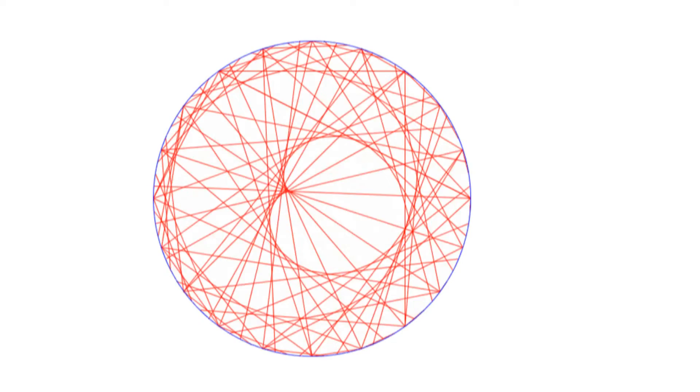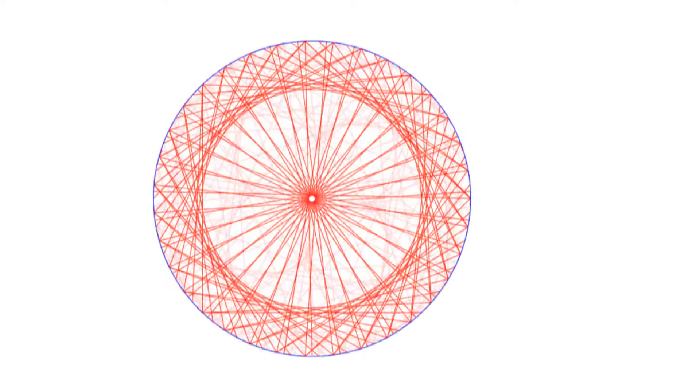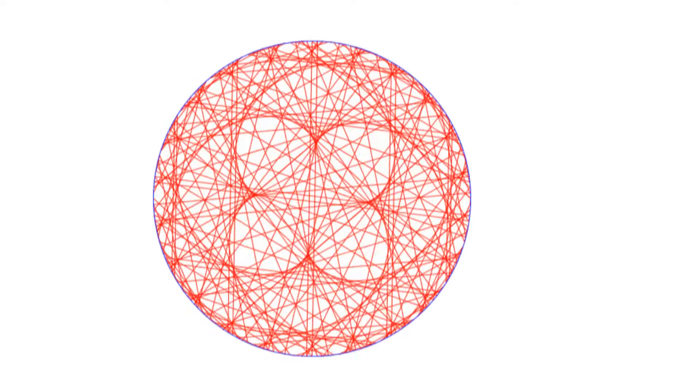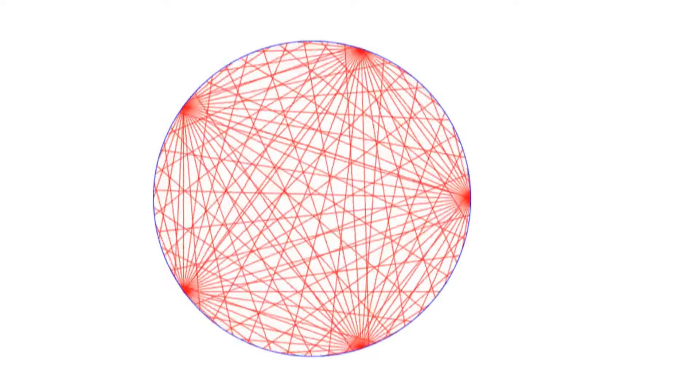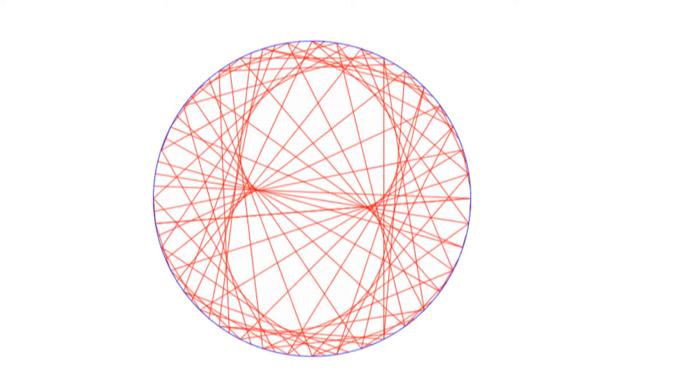Hello, today we will talk about graphs that can be generated by multiplication tables and the movement of planets in the solar system. On internet, there are a number of blogs and videos which show graphics that can be obtained from the tables.